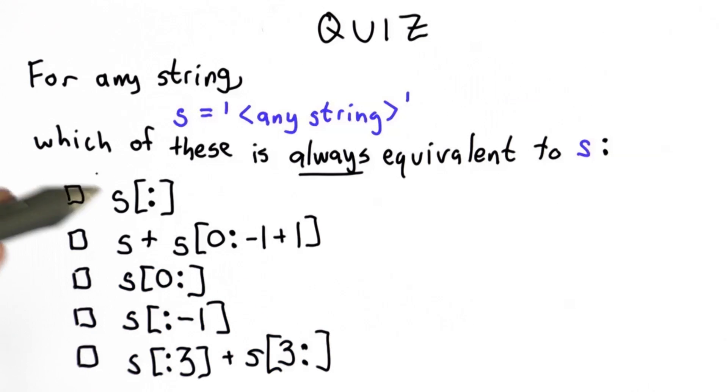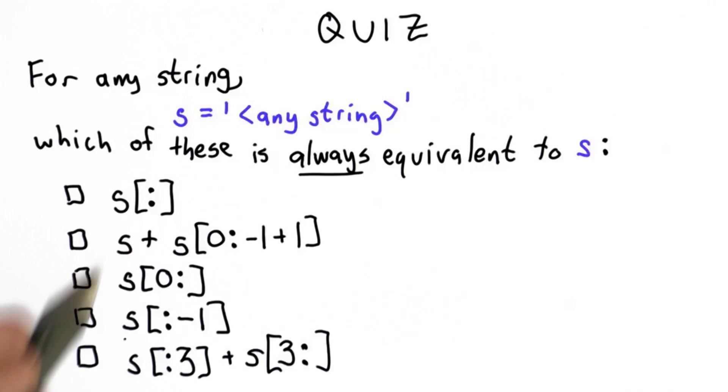So your goal is to check all of the expressions here that have the same exact value as s, no matter what string s is initially.